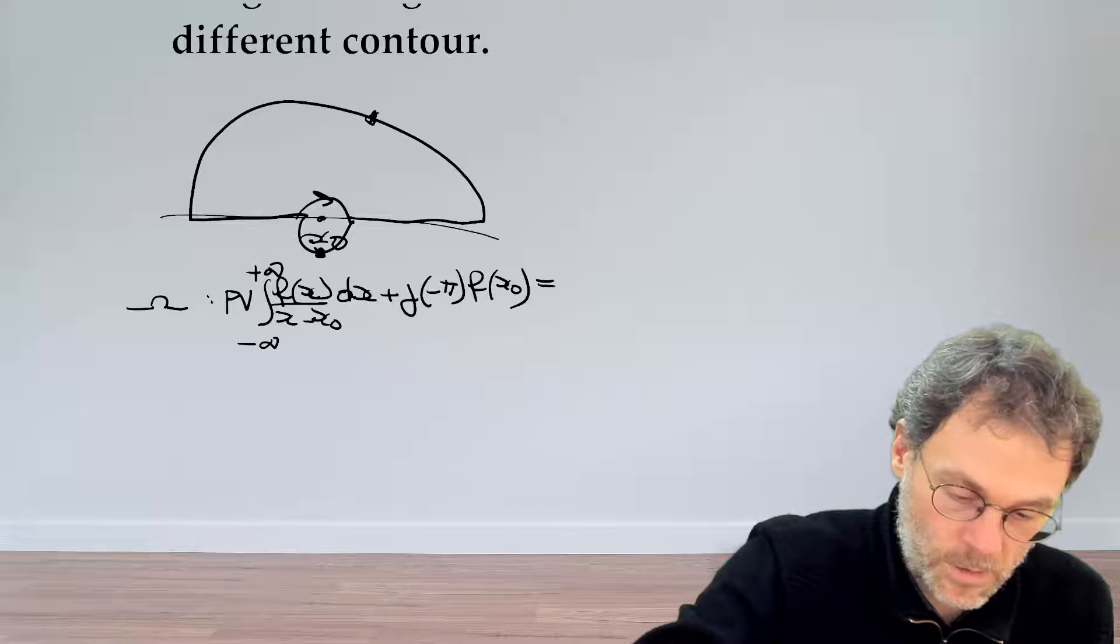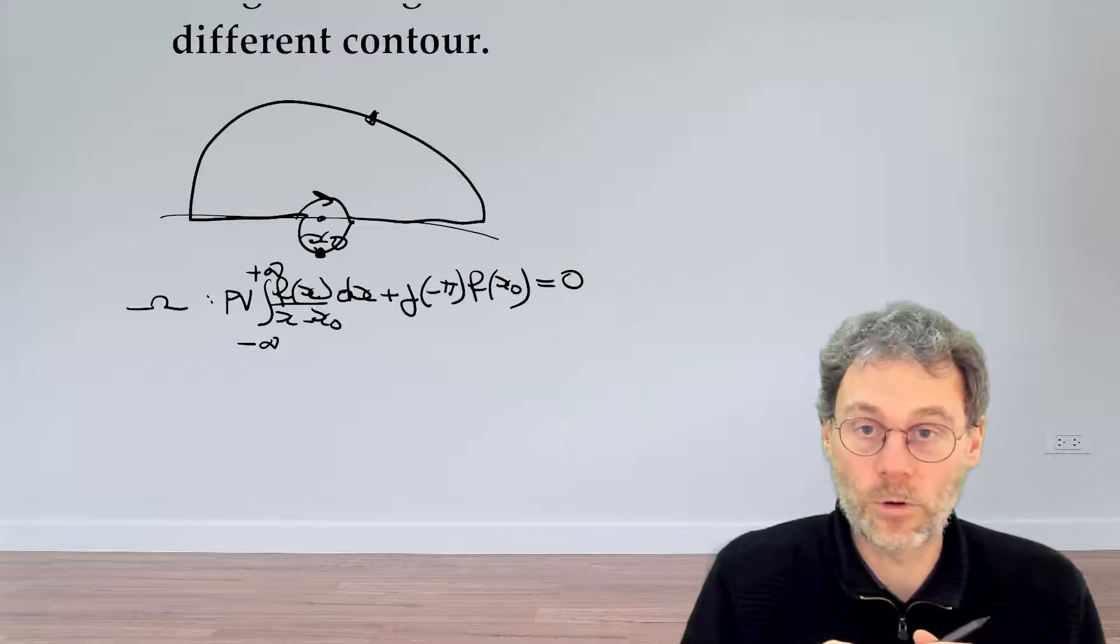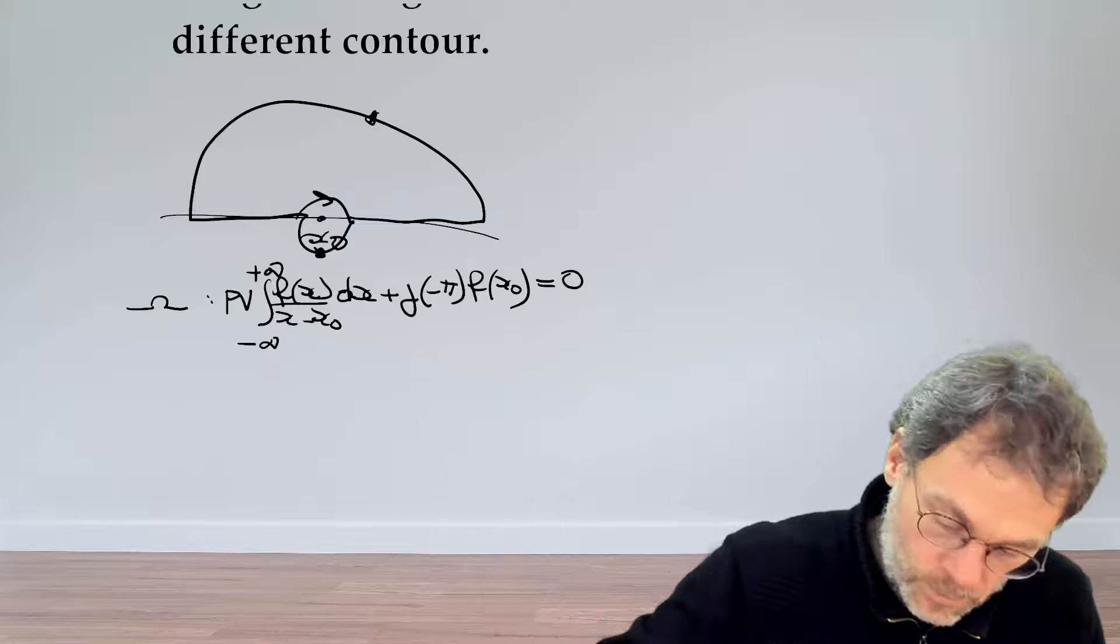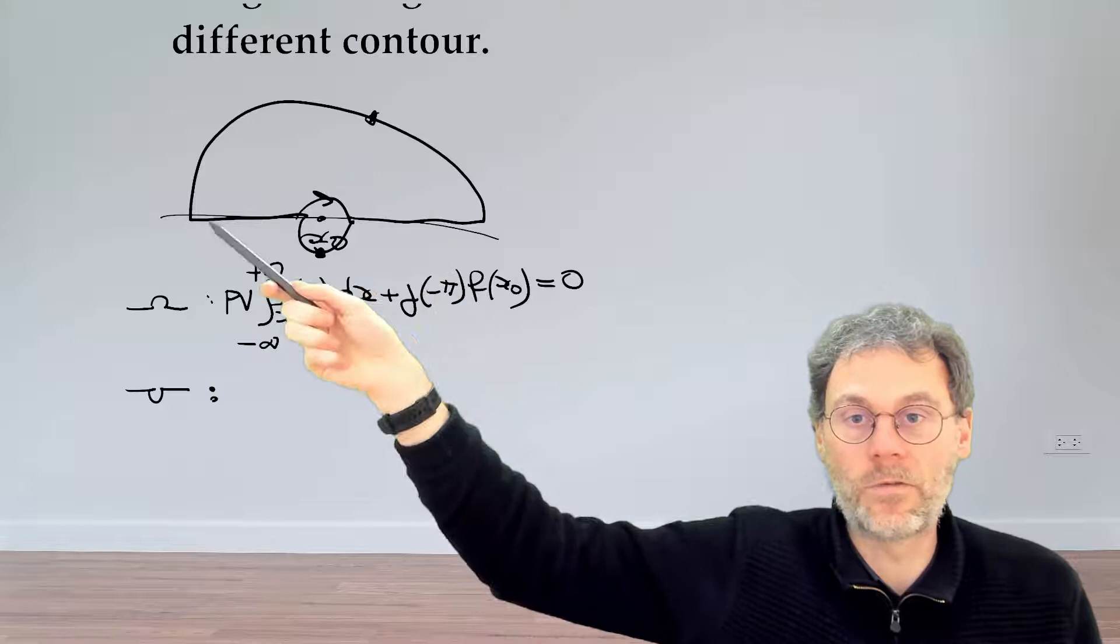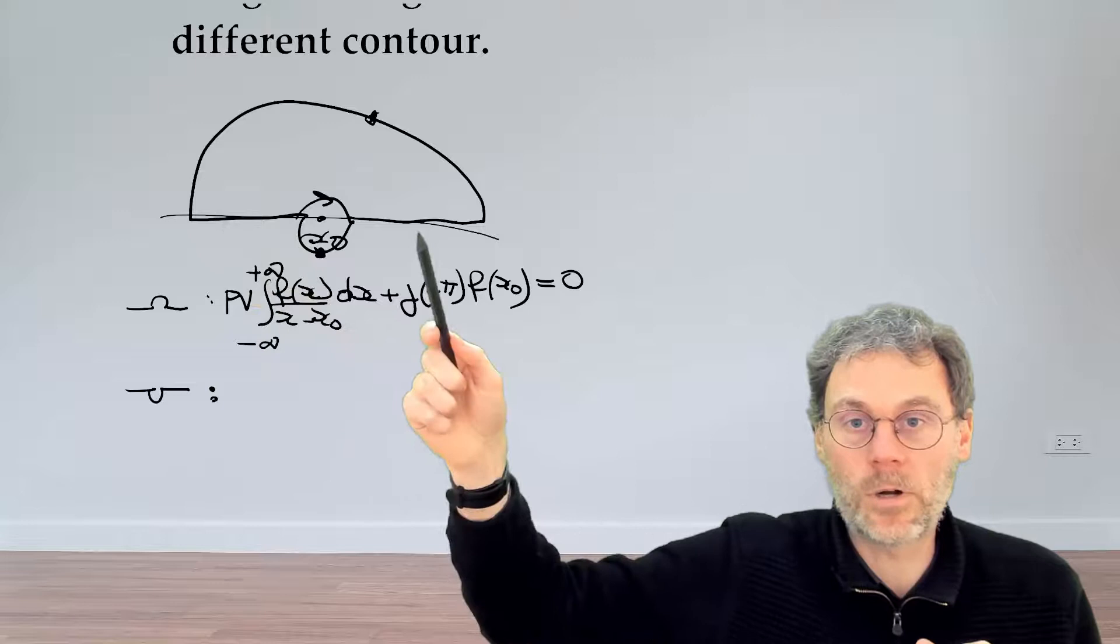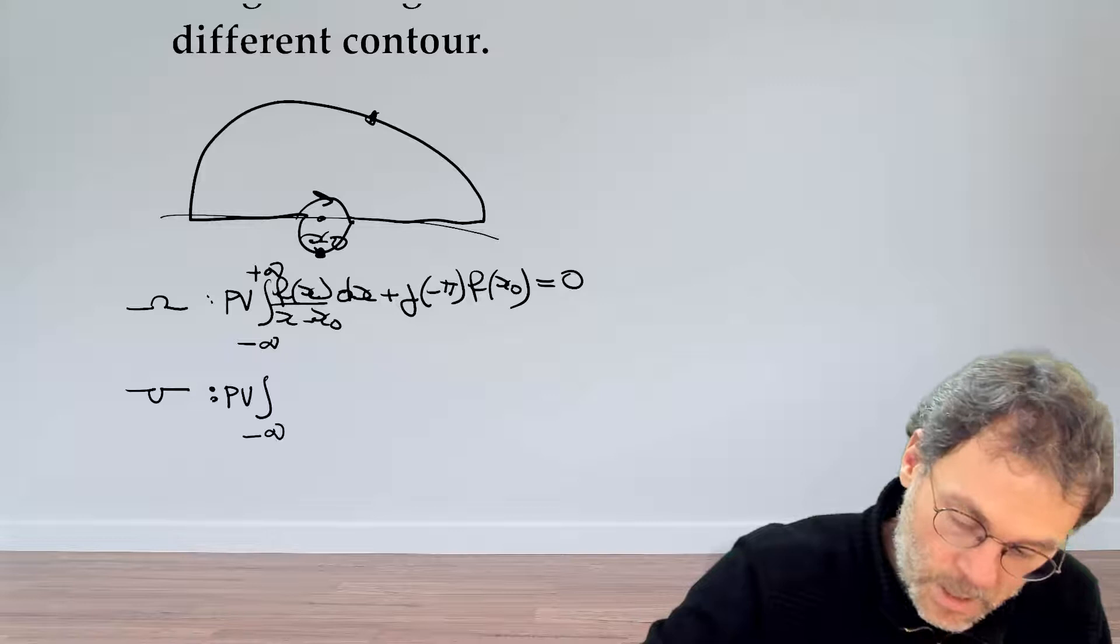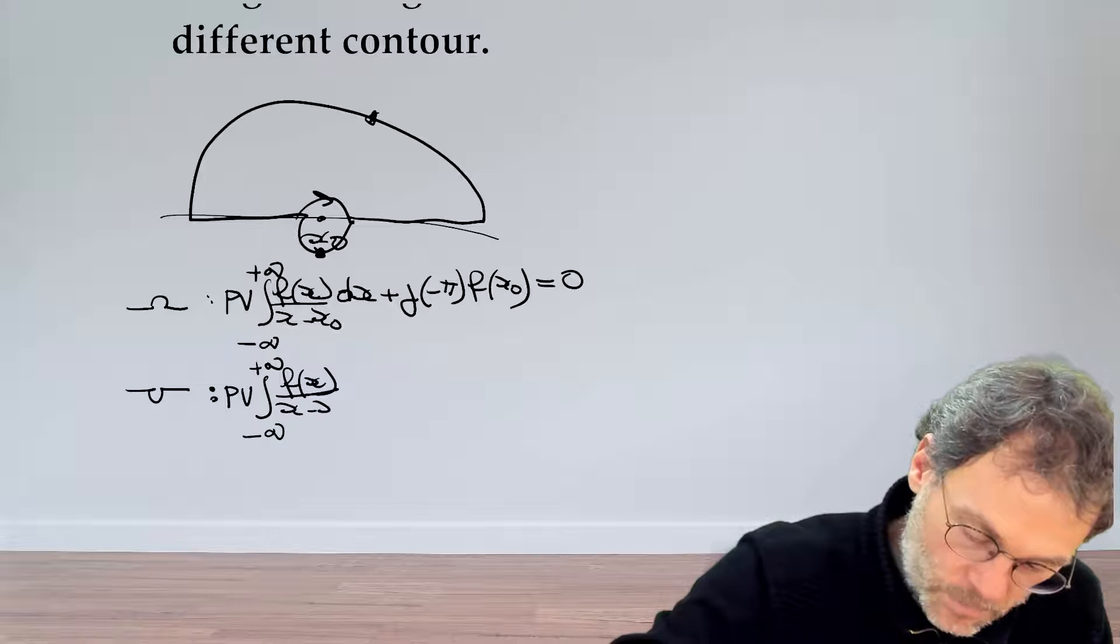This is our known starting point from the calculation in the textbook. Let's see what happens to this expression when we flip the orientation of our contour. Obviously that part here still vanishes and we only need to look at what happens over here. The part here and the part there, nothing will change. It's still going to be the principal value integral minus infinity plus infinity f of x, x minus x0, dx.